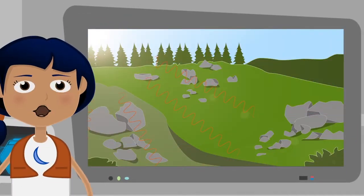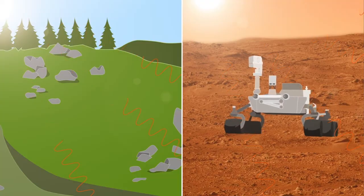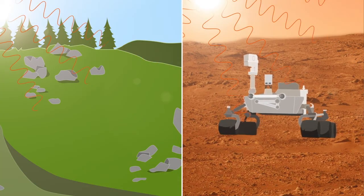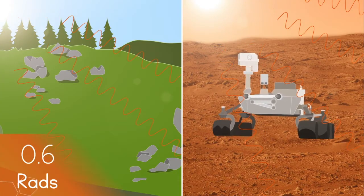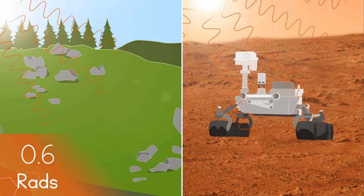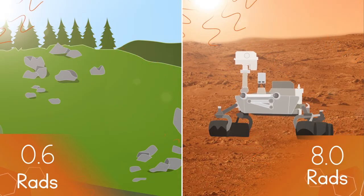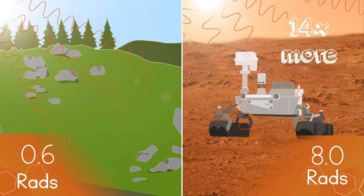On Earth, we are protected by our atmosphere. But on Mars, there is little protection. On average, people on Earth are exposed to a safe dose of 0.6 rads of radiation per year. The Mars rover Curiosity was exposed to 8 rads per year during its time on Mars. That's almost 14 times what it is on Earth.